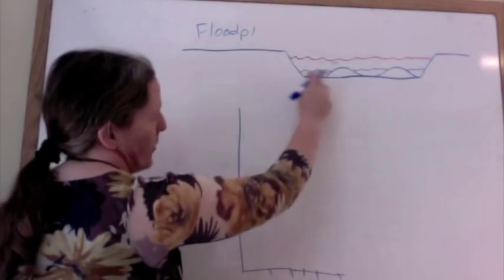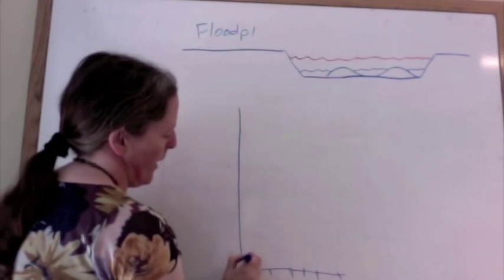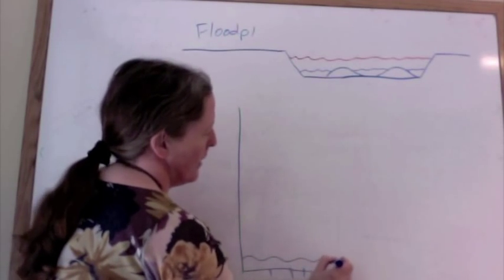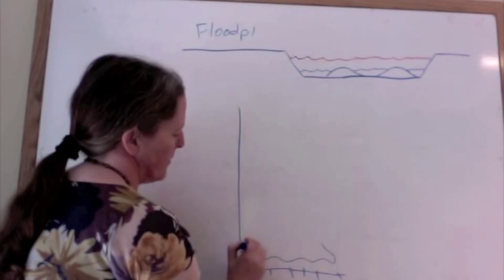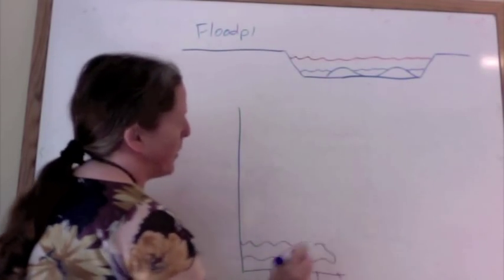When this sort of channel set first migrates through, you have a big erosion surface. And then you get deposits from successive channels, if they migrate by.